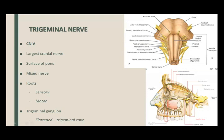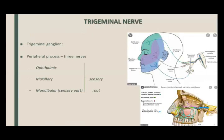The trigeminal nerve enters the trigeminal ganglion, which is an entirely sensory structure. The motor component passes deep to the trigeminal ganglion and has nothing to do with it, except that the two travel together. The trigeminal ganglion is a flattened structure lying in the trigeminal cave — a small depression on the petrous part of the temporal bone.